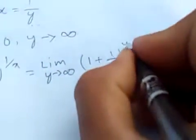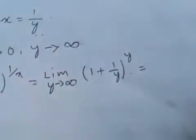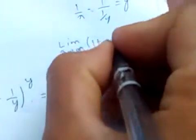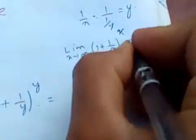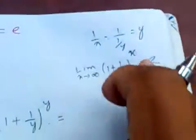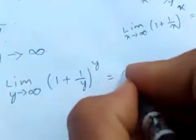In a previous video, I have proved that limit x tends to infinity of (1 + 1/x)^x equals e. Now this is the same as this one, so it is just e.